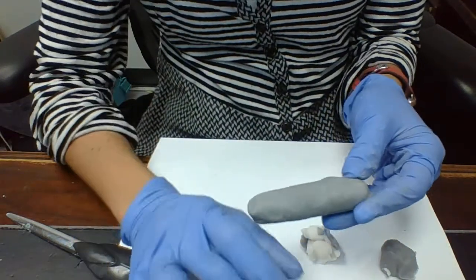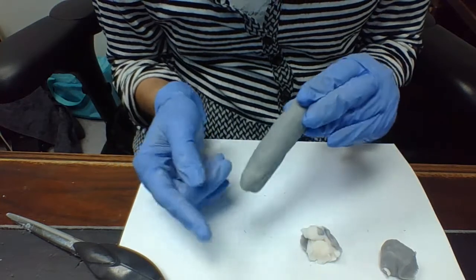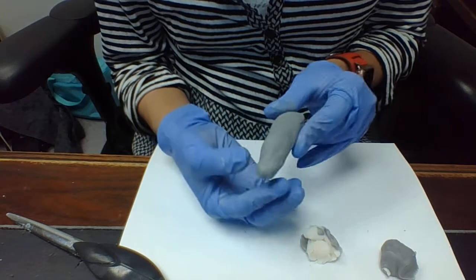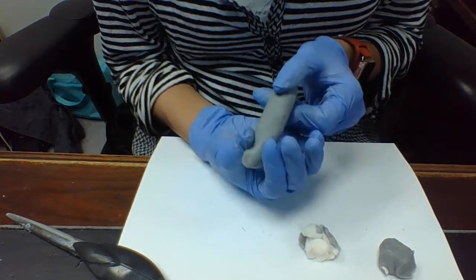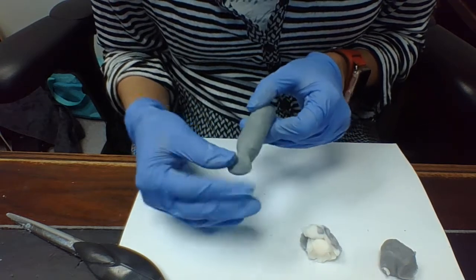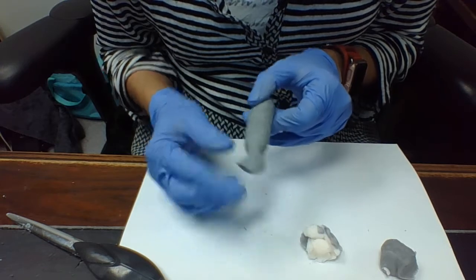So this is going to be a cylinder like a log, and one end is going to be the tail and the other one is going to be the head. The end that's going to be the tail, I'm going to pinch, and then I'm going to start flattening the tail and then pinching the corners.